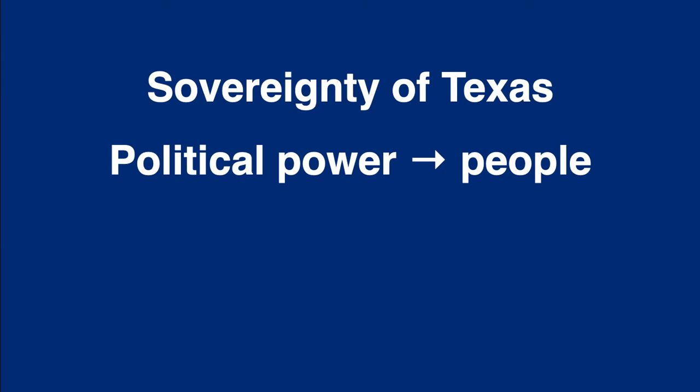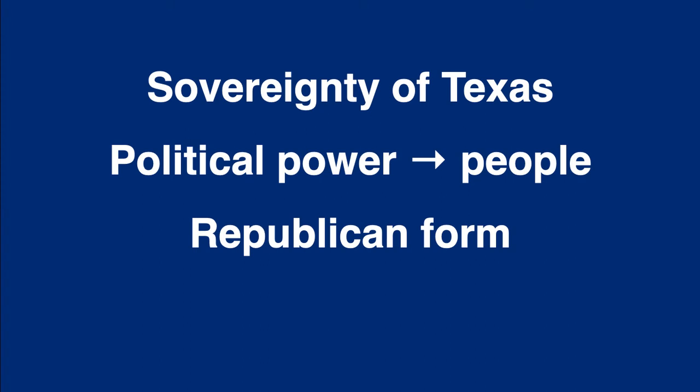The first article of the Texas Constitution contains the Texas Bill of Rights. Many of these rights have already been mentioned in other presentations explaining the U.S. Bill of Rights. Among the many sections in the Texas Bill of Rights are Section 1, which declares the sovereignty of the state of Texas. Section 2 declares that all political power is inherent in the people, and further, the faith of the people stands pledged to a republican form of government.